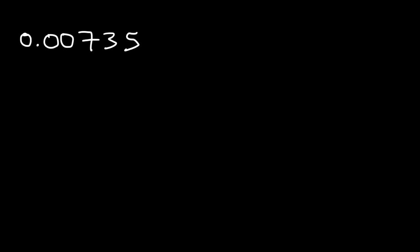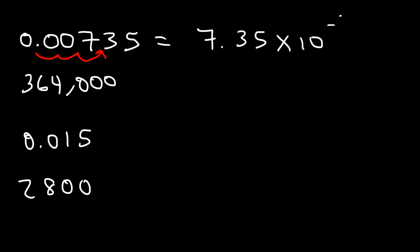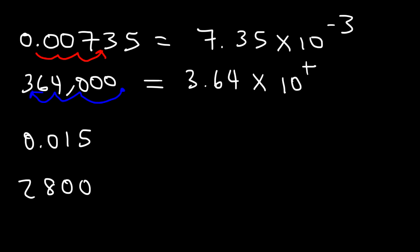Now let's work on a mixed review — converting numbers into scientific notation. The first number is small, so it gets a negative exponent. Moving the decimal between the 7 and 3, three units to the right, gives 7.35 times 10 to the negative 3. The second is a large number; moving the decimal 5 spaces to the left between the 3 and 6 gives 3.64 times 10 to the positive 5.